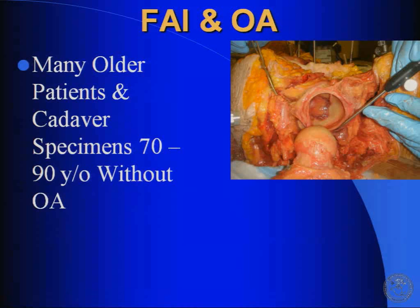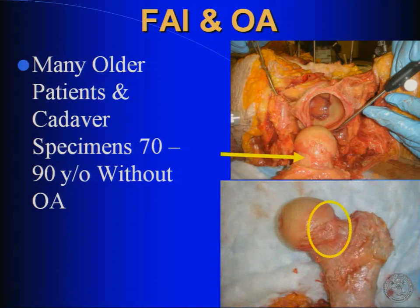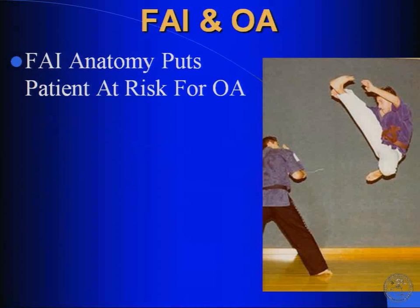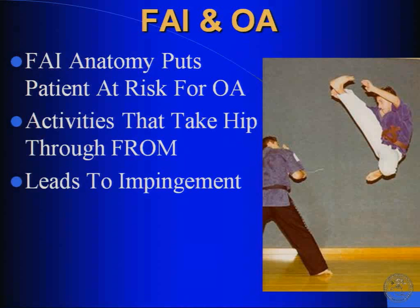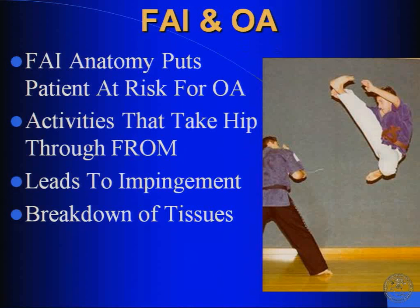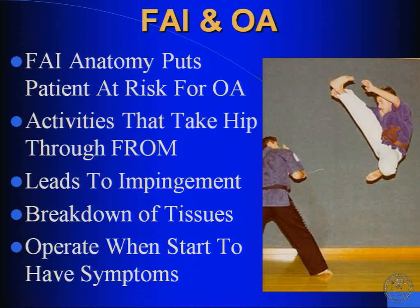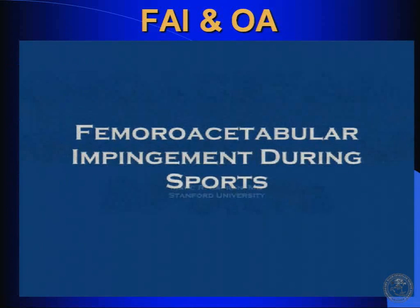However, I've had some patients in their 70s without arthritis who have clear anatomy of impingement. Here's a 90-year-old specimen where we were doing some studies, and you can clearly see the loss of offset of the anterior femoral head and neck junction, yet the articular cartilage looks pretty good. I think the anatomy of impingement puts the patient at risk for arthritis, but you have to be involved in activities that take your hip through a full range of motion to lead to the impingement and breakdown of tissues — and that's when you need to consider operating.